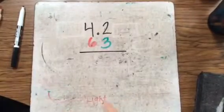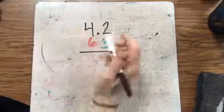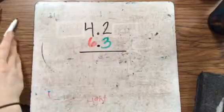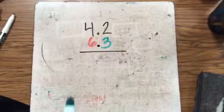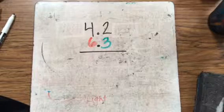Today, I'm going to teach you how to multiply decimals. In this problem, we're multiplying 4.2, or 4 and 2 tenths, times 6.3, or 6 and 3 tenths.